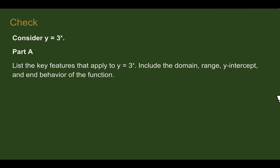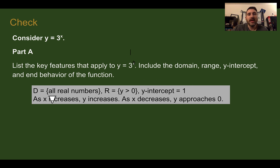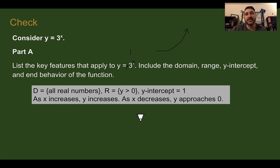Check your understanding: Consider y equals 3 to the x power. For the key features: the domain is all real numbers, the range is y greater than zero, and the y-intercept is 1 — plugging in zero for x gives 3 to the zero which is 1. This is really 1 times 3 to the x, so 3 is what we're multiplying by. Since we're multiplying by a number greater than one, it's a growth function, so as x increases y increases, but as x decreases it approaches the imaginary asymptote at zero.